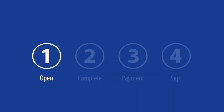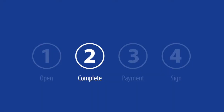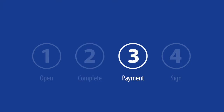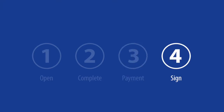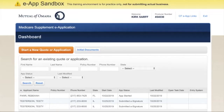First is opening and accessing the e-app. Step two, we're going to complete the app. Step three, we'll put in our client's billing info. And then step four, we'll sign the app and have our client sign the app as well. So let's get started.